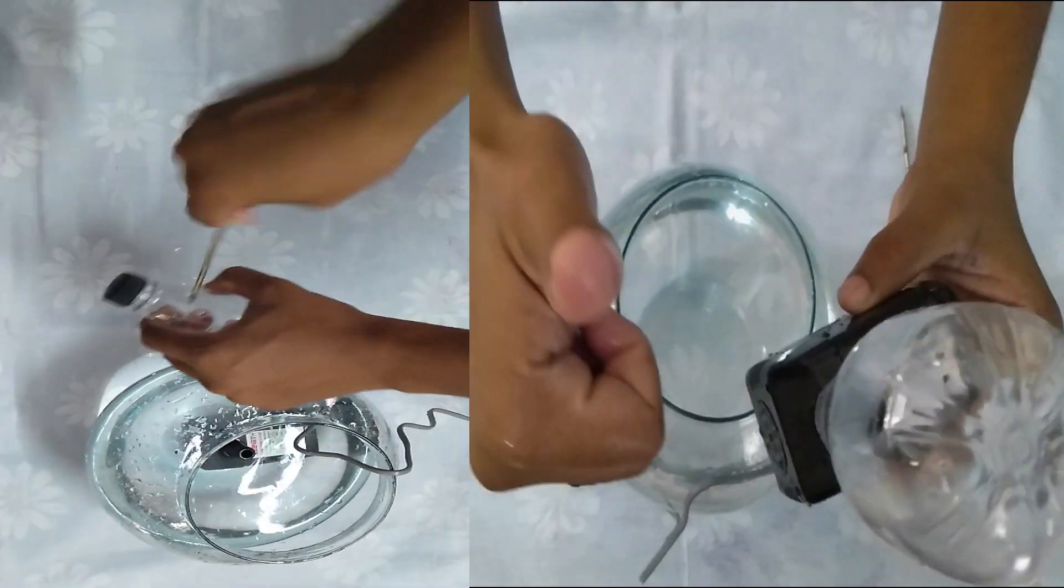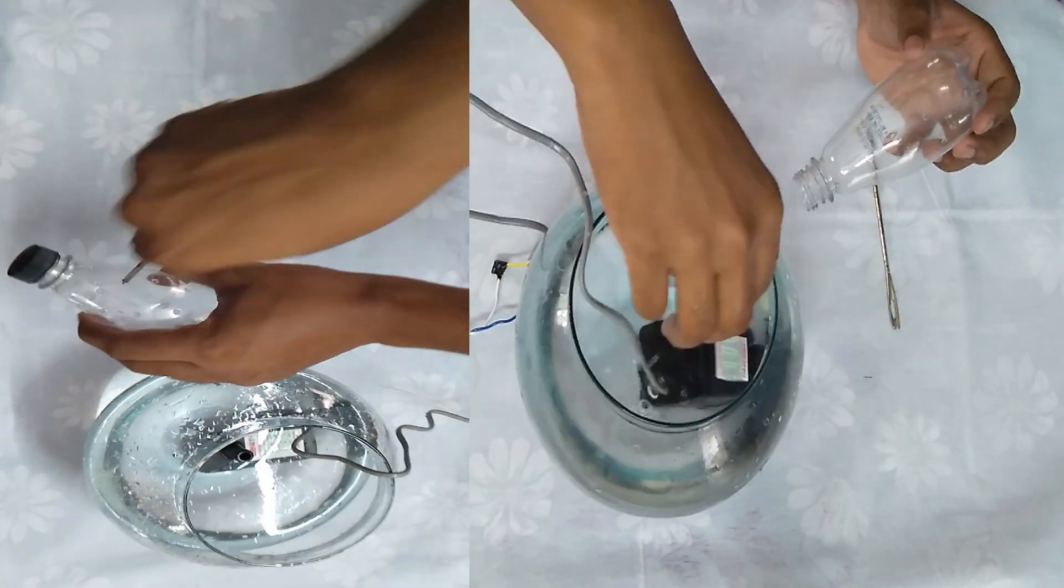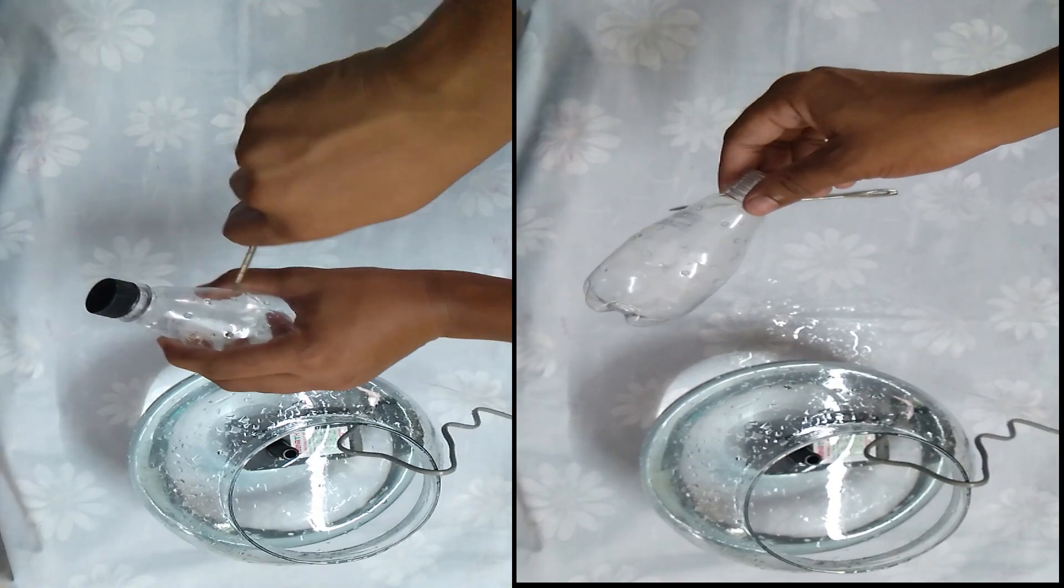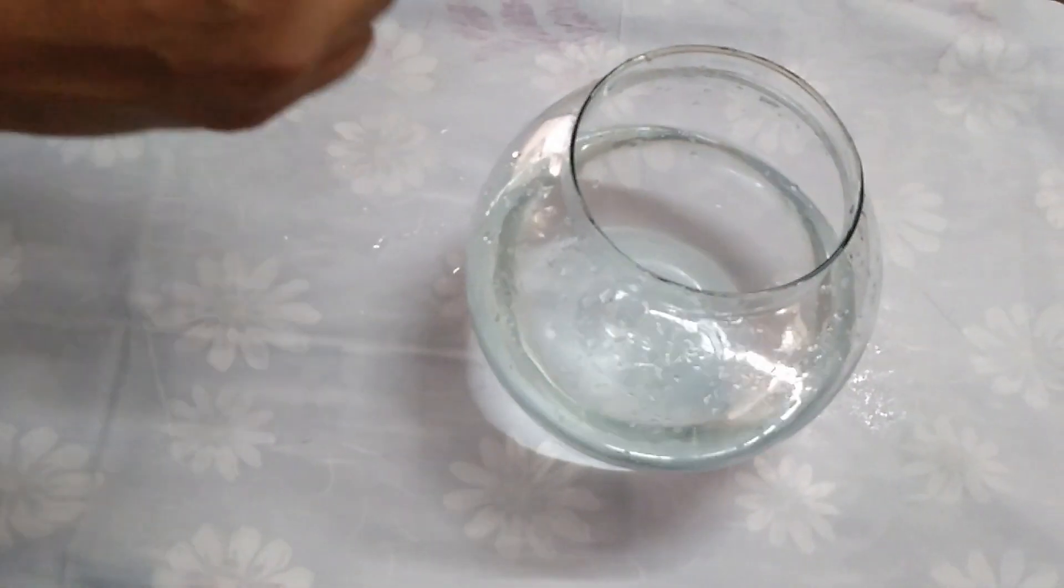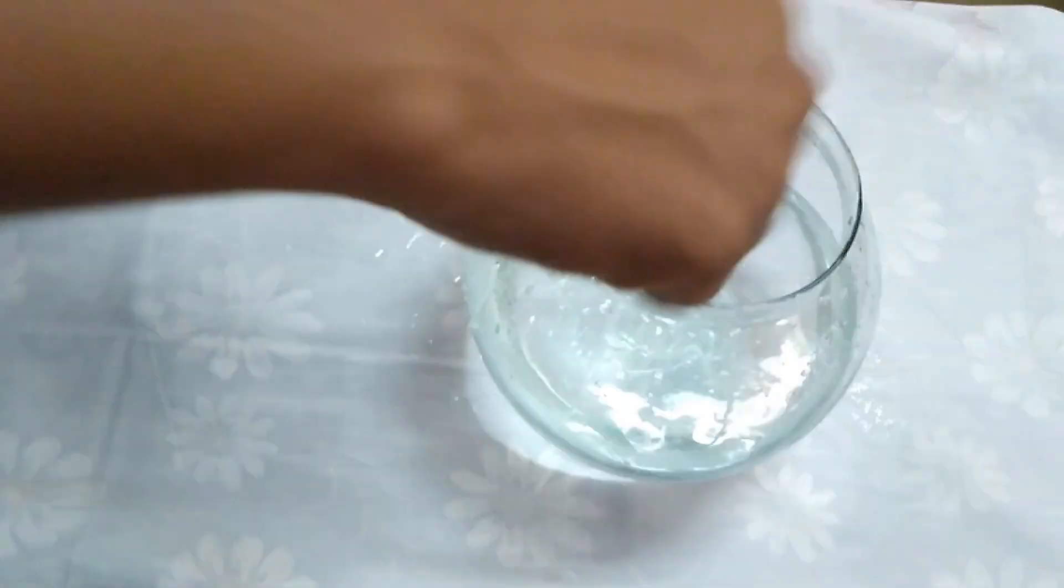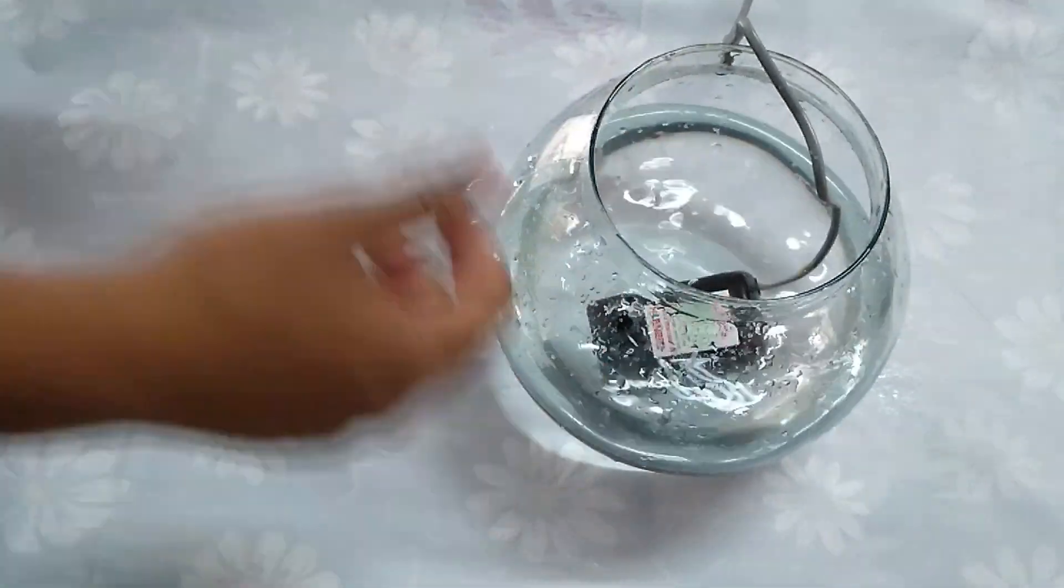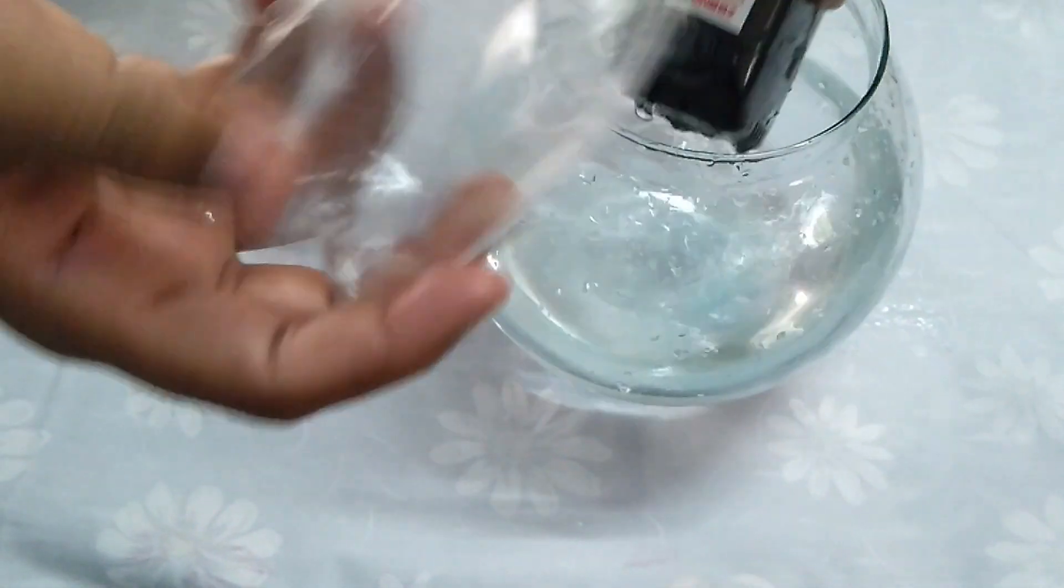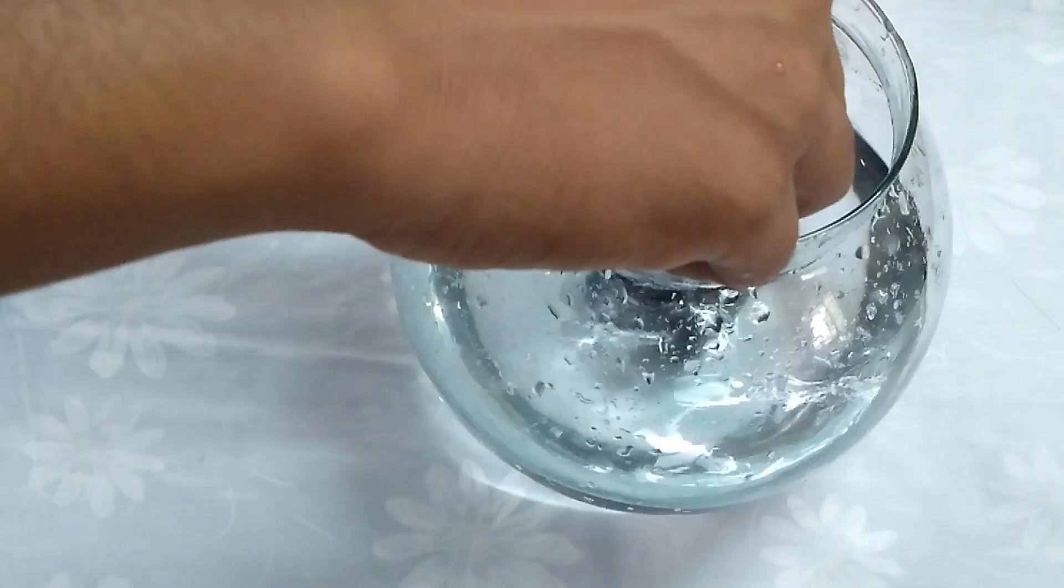Now remove the cap from the bottle and fix it tightly into the DC motor. Put this DC motor and plastic bottle into the ball. Now it is time to check whether it is properly working or not.